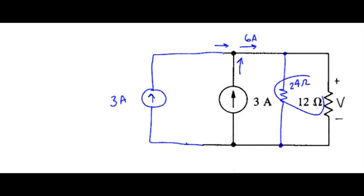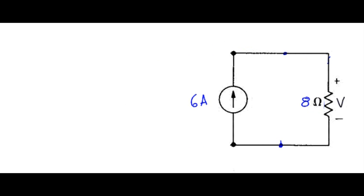As I said we can also combine those two in parallel. And 24 in parallel with 12 works out to be 8 ohms. So I think we've gone as far as we can. We now have 6 amps flowing through the 8 ohm resistor so the voltage is 6 times 8 or 48 volts.